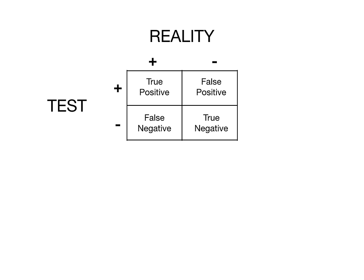This is how you fill out the 4x4 table, and this is where you have to start regardless of which formula you're being asked for on your exam. You have to know where all these values lie and the plus/minus signs for reality and test. Now I'm going to replace all these with abbreviations: true positive, false positive, false negative, and true negative. I'll keep this in the bottom corner of the video so you can refer to it throughout.